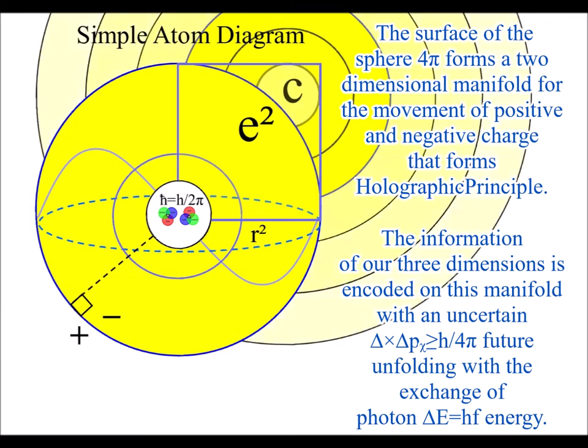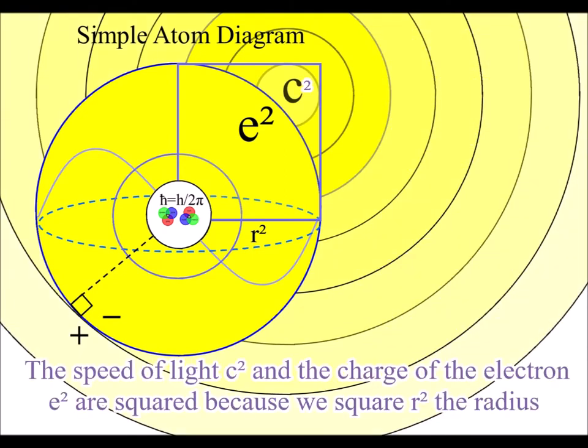We have to square the radius because the process is relative to the spherical surface. We can see this mathematically with the speed of light squared and the charge of the electron squared.